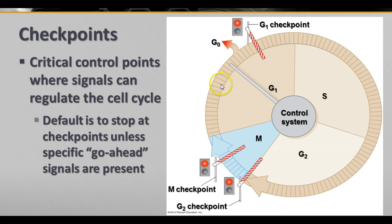The default is to stop at the checkpoints unless there's a specific go-ahead signal. For instance, as the cell is growing and gets to the G1 checkpoint — this relates to the surface-to-volume ratio and the conditions the cell is in — if there's not a specific signal, the cell will stay in G1 or really the G0 phase until the G1 checkpoint gets the go-ahead signal. When it receives that go-ahead, it will continue growing and enter the S phase where DNA is replicated.